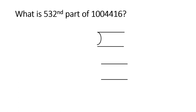Let us take one more question: What is the 532nd part of 10,416? Simplify this — finding the fourth part of anything means dividing by 4. Similarly, this is a division question. We need to identify it as division, meaning we divide 10,416 by 532.